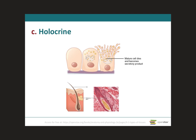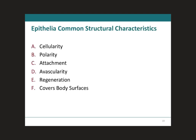To summarize the holocrine secretion: the cell is destroyed as it releases its products and the cell itself becomes part of the secretion. Epithelial tissue has common structural characteristics, which we will cover on the following slides: cellularity, polarity, attachment, avascularity, regeneration, and the fact that it covers body surfaces.